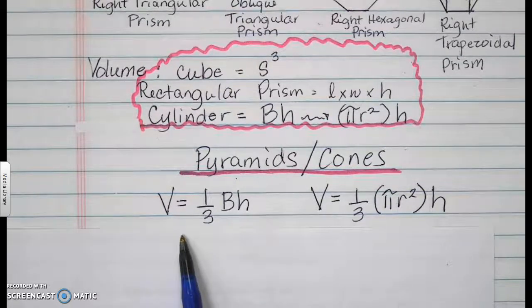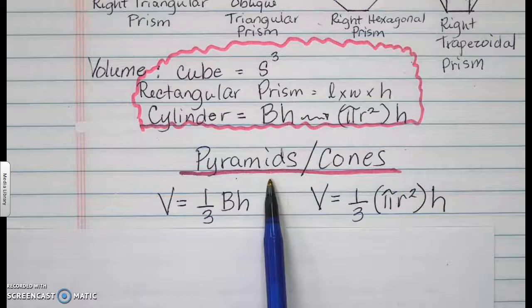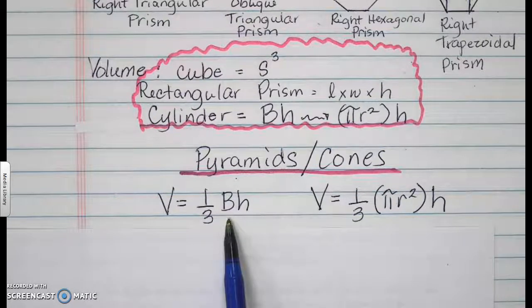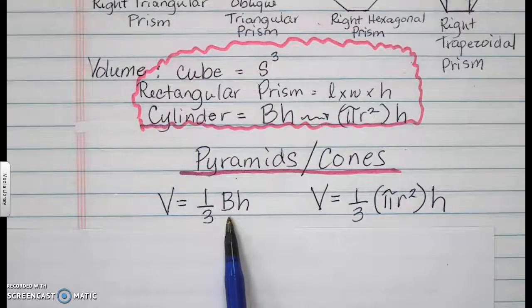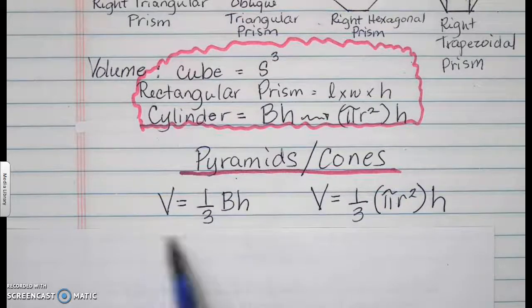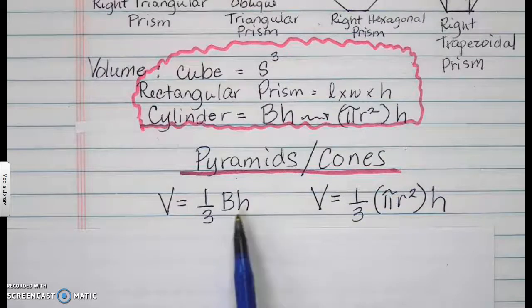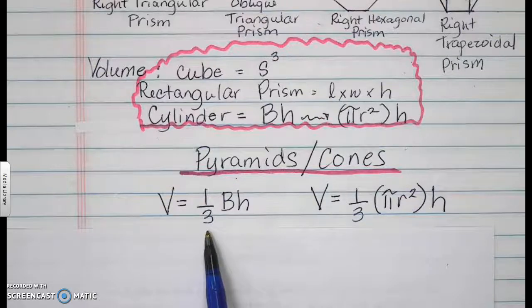Just for emphasis, a pyramid is also named after its base. A pyramid may have a square base, a hexagonal base, a pentagonal base, or a triangular base. Going back to the volume, whatever that base is, get the area of that multiplied by the height of the pyramid, and then divide it by 3, or multiply it by one-third.